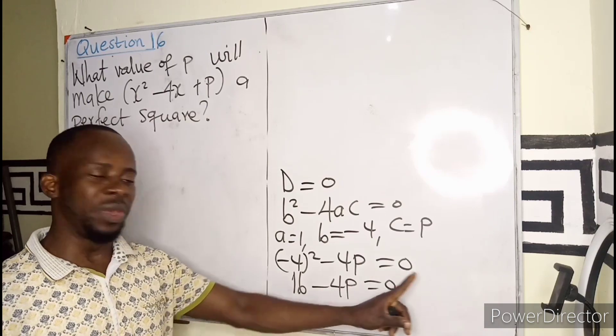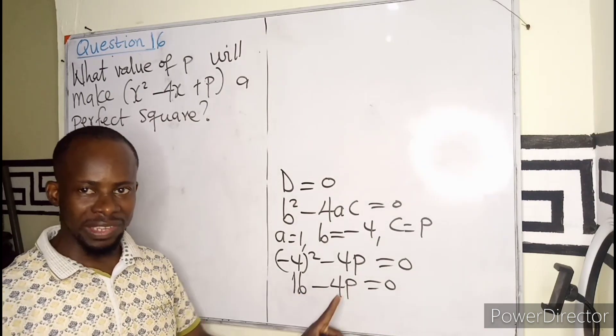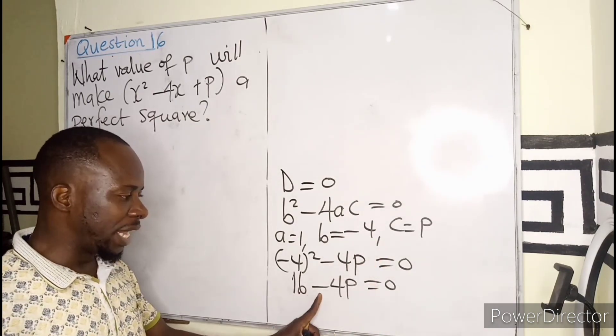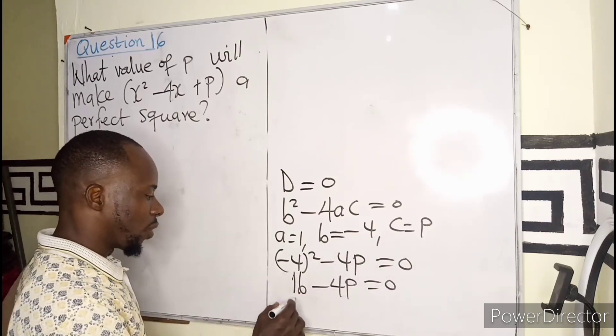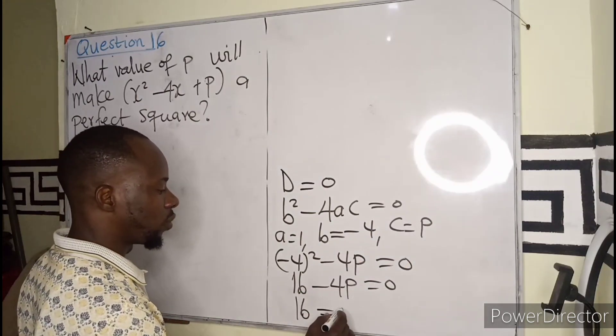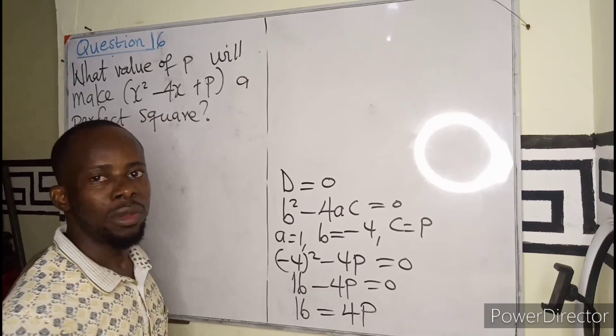So we send P to the other side, as in 4P. Negative here, it becomes positive there. So 16 equals to positive 4P.